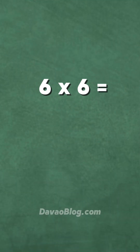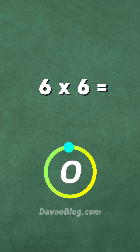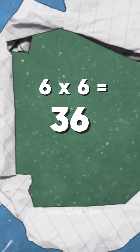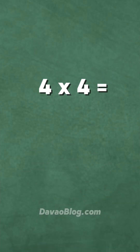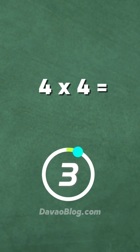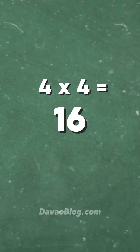6 times 6 is equal to... 36. 4 times 4 is equal to... 16.